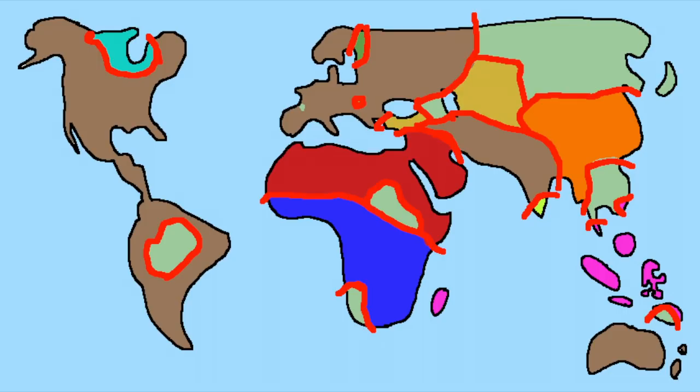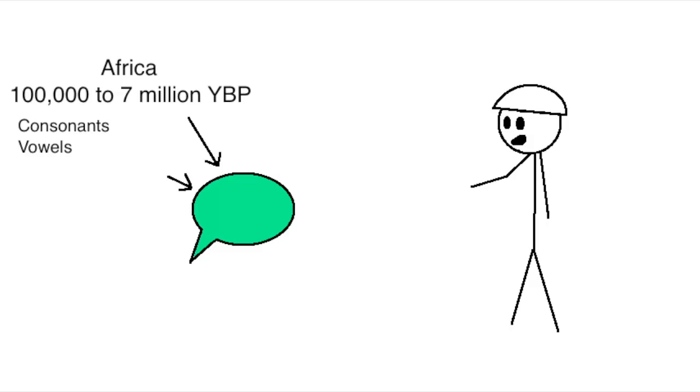it probably had both consonants and vowels, it probably had between 10 and 100 phonemes, you probably had to use your tongue to speak it, you know, stuff like that. And that's kind of it. Beyond that, we don't really know anything about proto-world, and we probably never will. Including whether or not it existed. I hope you found it kind of fun to think about, though. See you soon for more linguistics videos!